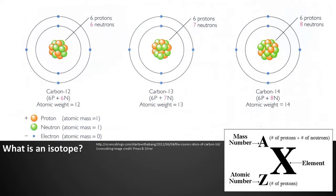This figure shows the three isotopes of carbon. Isotopes are atoms with the same number of protons but different amounts of neutrons. For the three isotopes — carbon-12, carbon-13, and carbon-14 — they each have six protons but have different numbers of neutrons: six, seven, and eight respectively. Because of this, they have different atomic weights: 12, 13, and 14, which give rise to the names of these different isotopes.